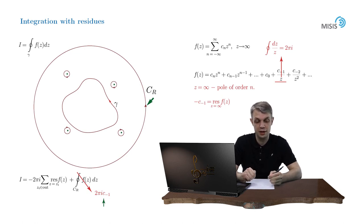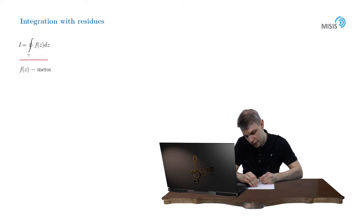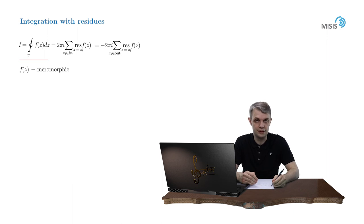And finally, we can formulate a beautiful complement to our initial residue theorem. Now the full residue theorem goes as follows: The integral of a meromorphic function along a closed positively oriented contour is equal to 2πi times the sum of the residues of the function inside this contour, or minus 2πi times the sum of the residues of the function outside this contour including the residue at infinity.